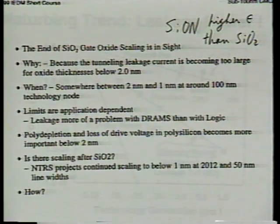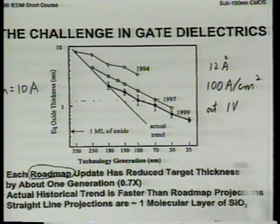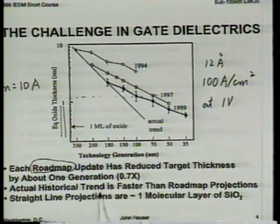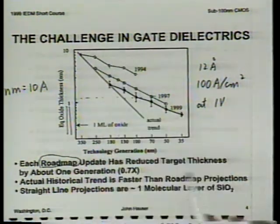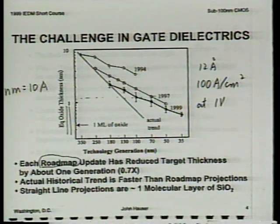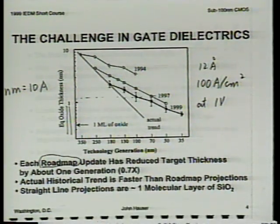Unfortunately, high-k dielectrics tend to have smaller band gaps. SiO2 has a band gap of 9 eV. There's a well-known correlation trend: if you want a high dielectric constant, the band gap will be smaller. If the band gap is small, you have more absorption and therefore a larger dielectric constant. So when using high-k dielectric, the barrier height becomes smaller — that's unfortunate. But overall, high-k dielectrics still offer reduced tunneling current.